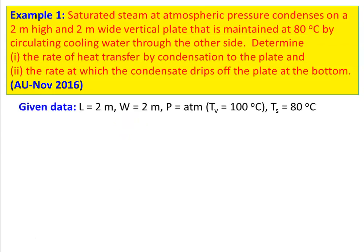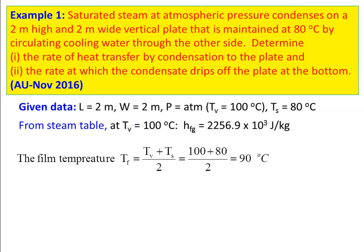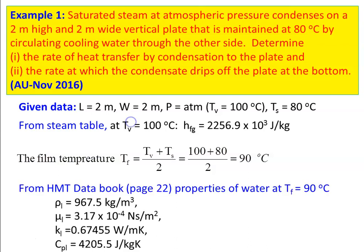After reading the problem, we write down the given data. The length of the plate is 2 meter, width of the plate is 2 meter, and the steam pressure is atmospheric. For saturated steam at atmospheric pressure, the temperature is 100 degree Celsius and the surface temperature of the plate is 80 degree Celsius. From the steam table at saturation temperature Tv of 100 degree Celsius, we take HFG — latent heat of evaporation — which is 2256.9 × 10³ joules per kilogram. All other properties are taken at the film temperature Tv plus Ts divided by 2, which is 90 degree Celsius. From the heat and mass transfer data book: density 967.5 kg/m³, absolute viscosity 3.17 × 10⁻⁴ N·s/m².